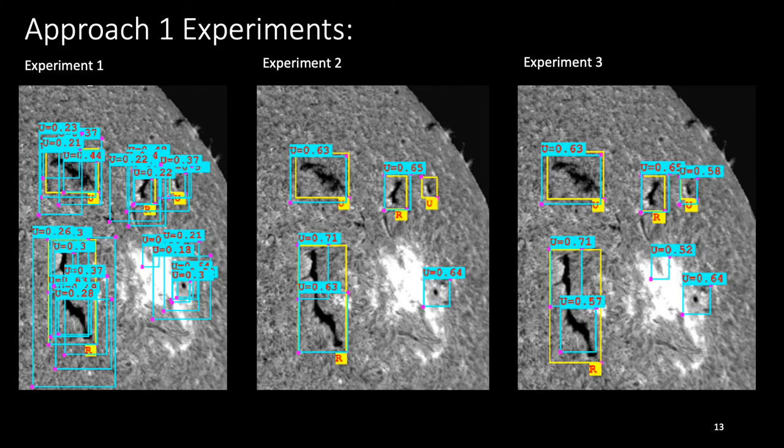As it is difficult to see the result of approach one in the previous slide, here are some of the results from approach one. Here, the green bounding box is the prediction from the model, whereas yellow bounding box shows the ground truth.